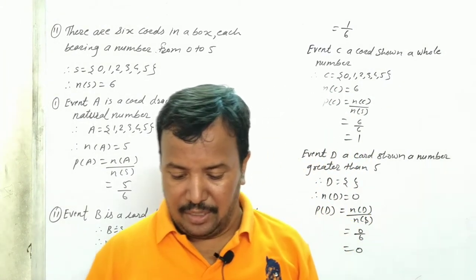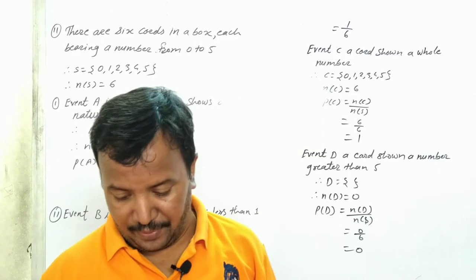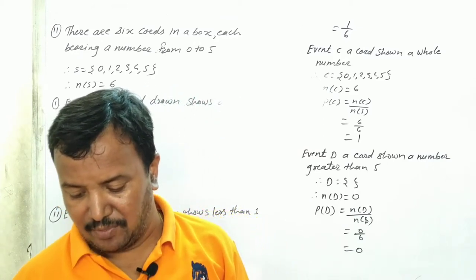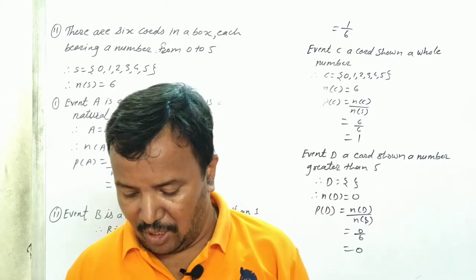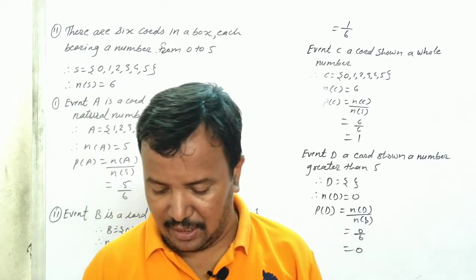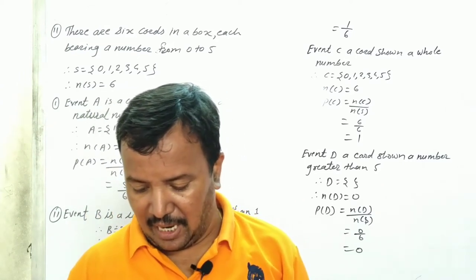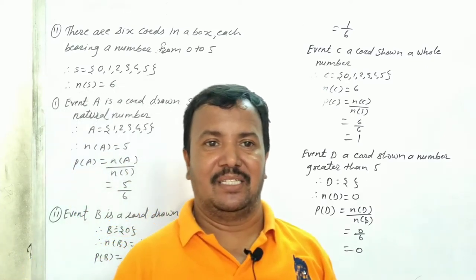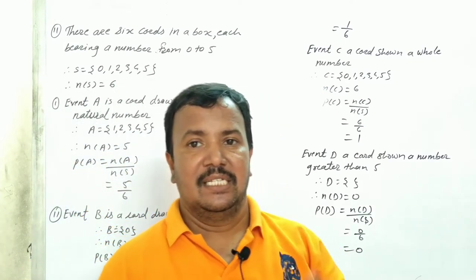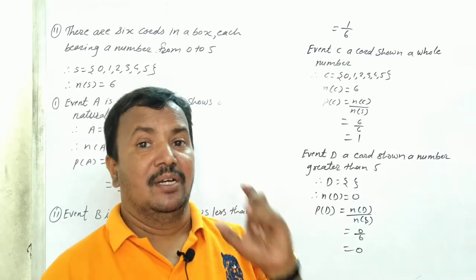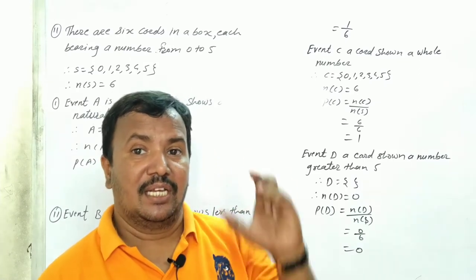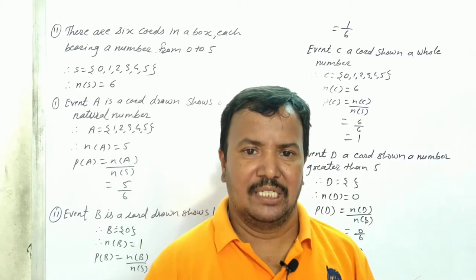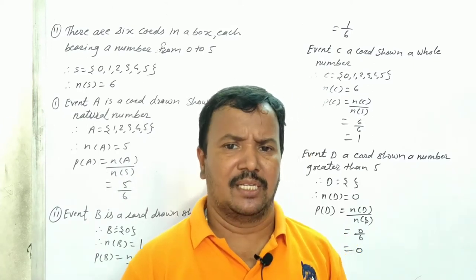Okay students, next question: there are six cards in a box, each bearing a number from zero to five. Find the probability of each of the following events — that a card drawn shows... here, a box with six cards, and the cards are numbered 0 to 5. Six cards means 0, 1, 2, 3, 4, 5.